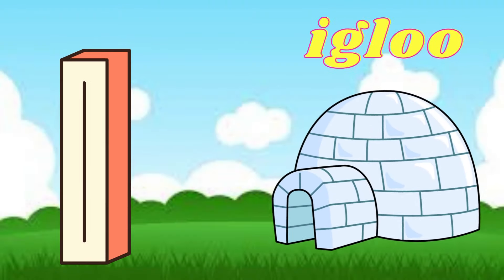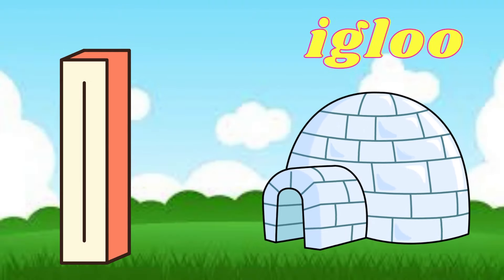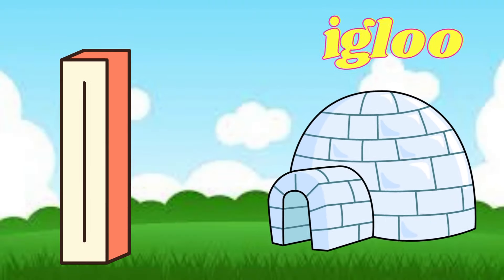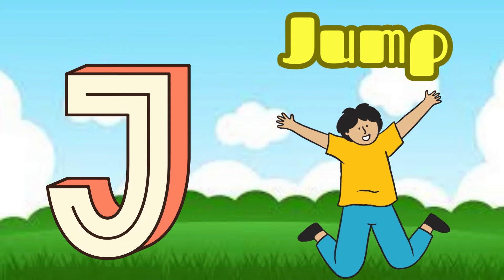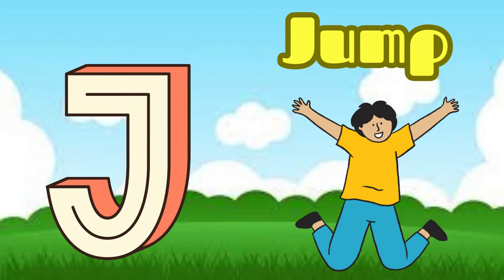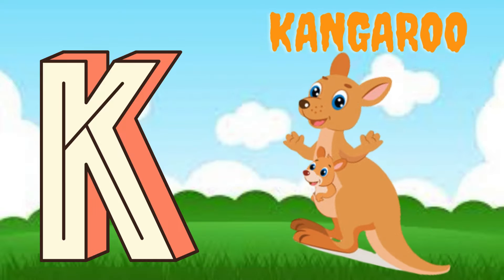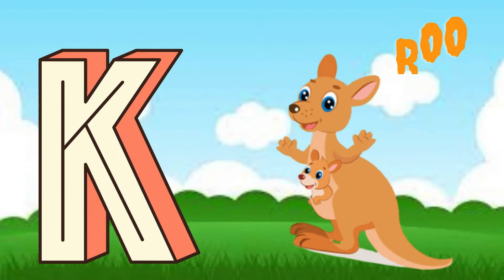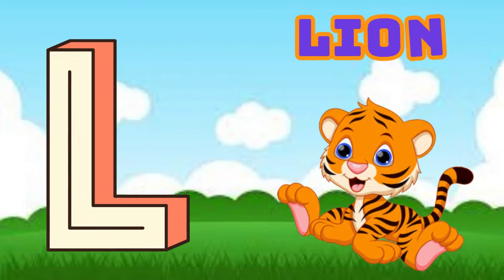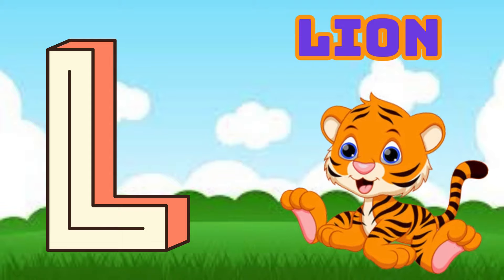I is for Igloo, I-I-Igloo. J is for Jump, J-J-Jump. K is for Kangaroo, K-K-Kangaroo. L is for Lion, L-L-Lion.